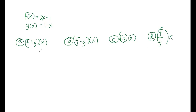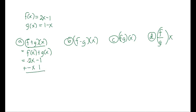Let's start with the sum function. This is simply adding f(x) plus g(x). Our f(x) is 2x minus 1, and we add g(x), which is 1 minus x. So we have 2x minus x, which gives x, and negative 1 plus 1, which gives 0. So our sum function is x.